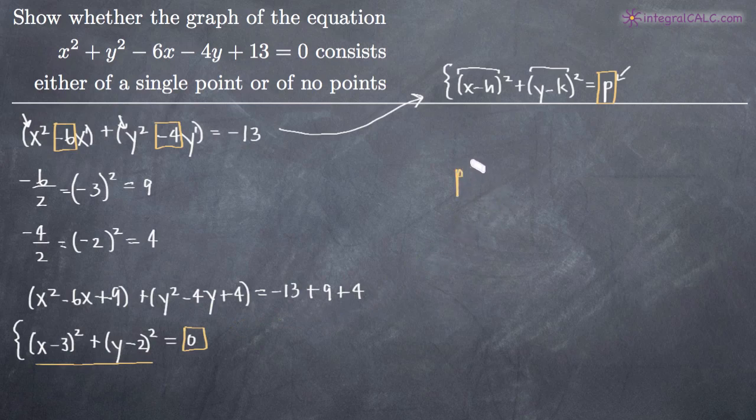If p is greater than 0, then you're dealing with a circle. If p is equal to 0, then you're dealing with a single point. If p is less than 0, then you're dealing with no points.